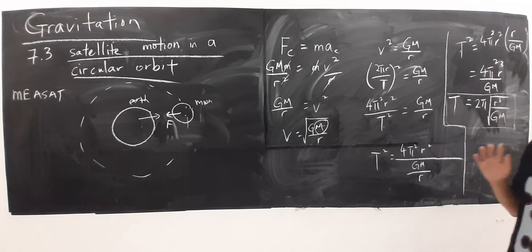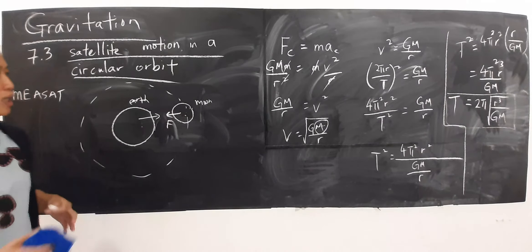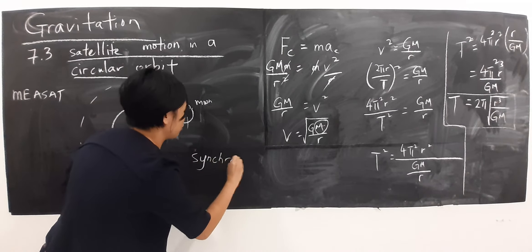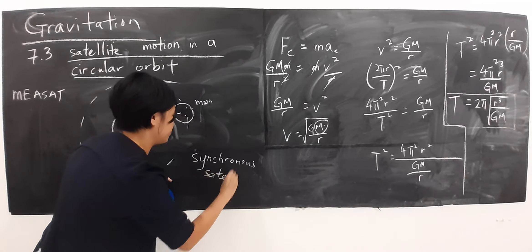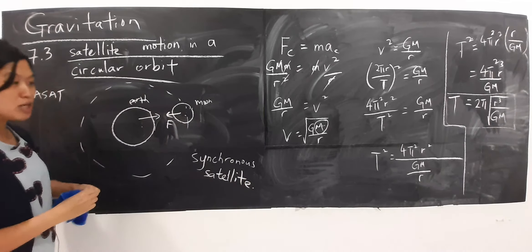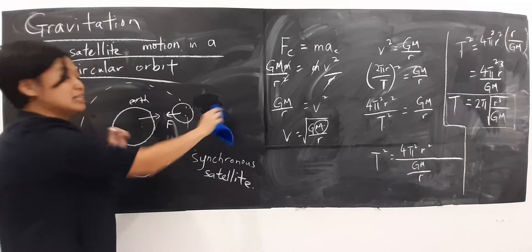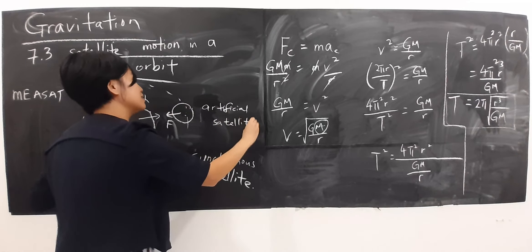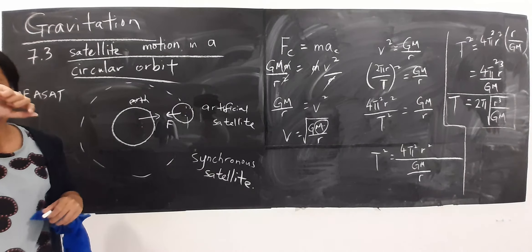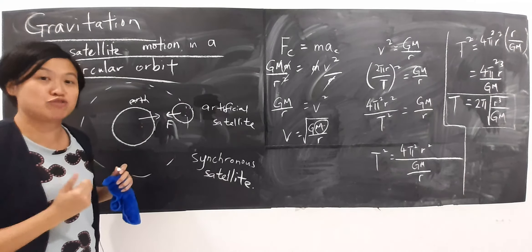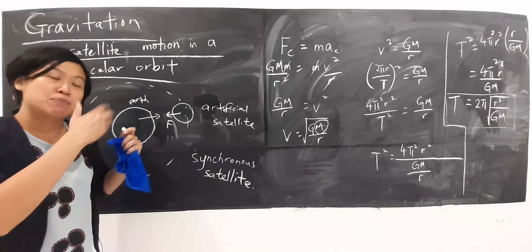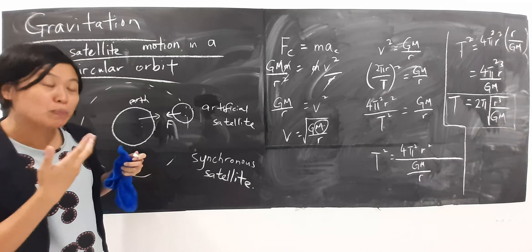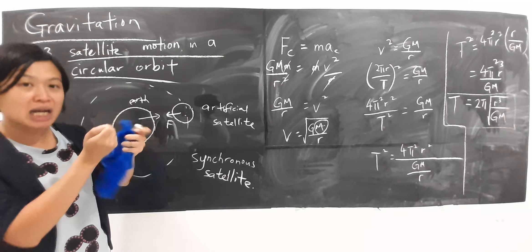Jadi untuk video ni, sebelum saya endkan class ni, video ni, for information, you should know what it's mean by synchronous satellite. Apa maksud synchronous satellite? For example, this one earned. And this one artificial satellite. Artificial satellite. Ada certain satellite di mana untuk memudahkan contohnya, untuk memudahkan Astro, untuk supaya lepas pemasangan piring tu, kita tak payah ubah-ubah kedudukan piring. Untuk mengelakkan kita menukarkan kedudukan piring ini.